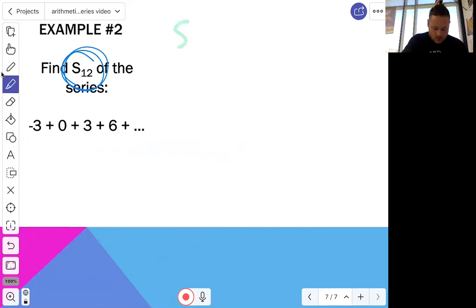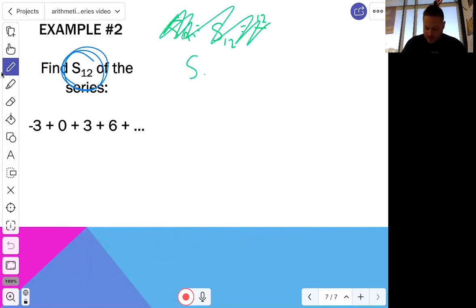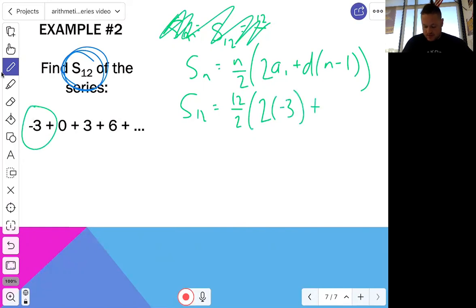So what we're going to use is we're going to use that other formula because I don't know the last term, but I'm pretty sure I can figure out the common difference. So our formula here is, SN equals N over two times two A1 plus D times N minus one. That is the original formula. I should always have that written down first. Now we're going to go ahead and plug in. So S of 12 is equal to 12 over two times two times my first term. Looks like my first term is negative three plus my common difference. Looks like we're adding three every single time. So my common difference is three. So I'm going to put a three there times N we said was 12 minus one.